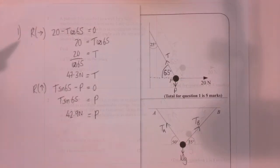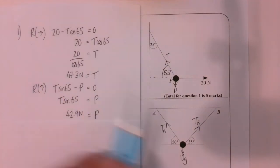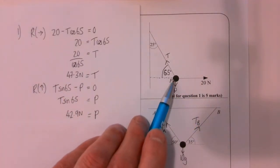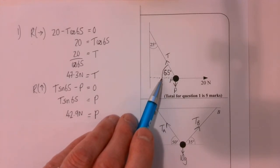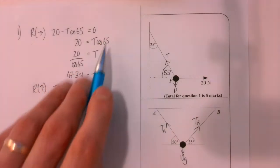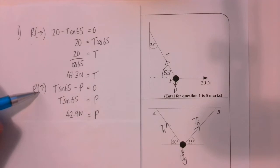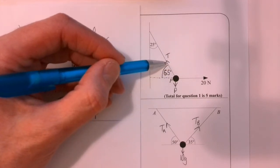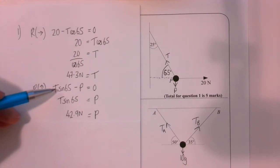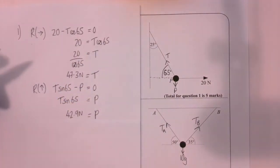For question one, resolving horizontally: I've got the 20-newton force and the horizontal component of T which is T cos 65, and that equals zero, so 20 = T cos 65. Resolving vertically: the vertical component is T sin 65 (or cos 25), so T sin 65 minus p equals zero, giving me a value of p.